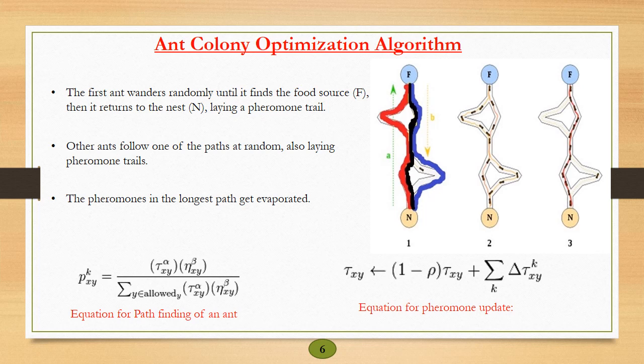Let's consider the figure: F be the food source and N be the nest. We know that the ants wander randomly until they find the food source F, and then return to the nest N by laying pheromone trails. Other ants will smell this pheromone level and follow the path of the first ant. After some time, the pheromones in the longest path will get evaporated and pheromones in the shortest path will be restored, and hence a shortest path is selected.